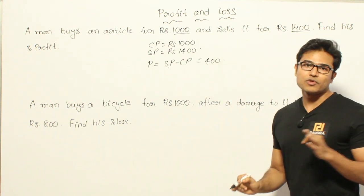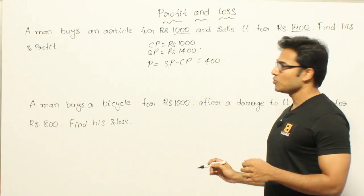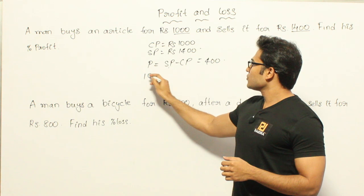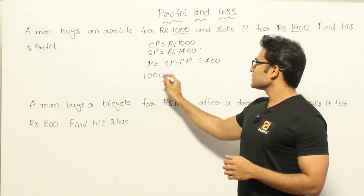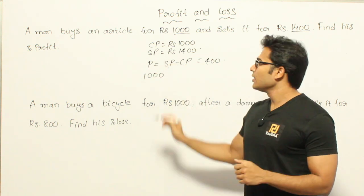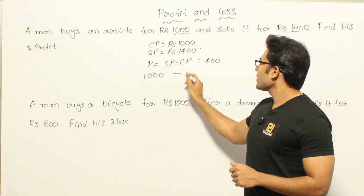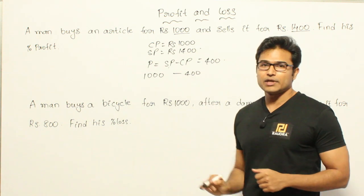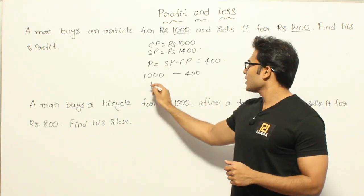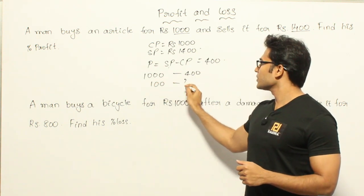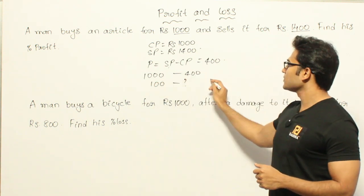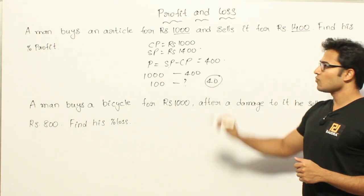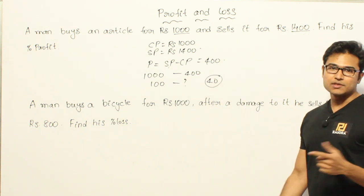Now they are asking about the profit percent. For 1000 rupees invested, the profit happened to be 400. Then for 100 rupees what is the profit? For 100 rupees it is 40. Therefore 40 percent is the profit.